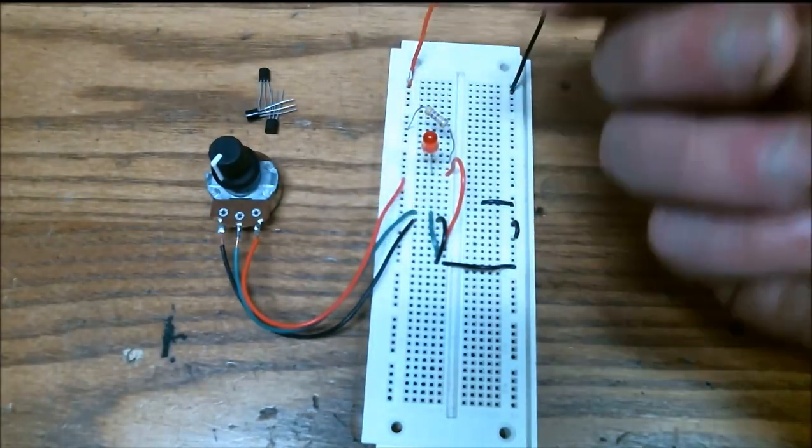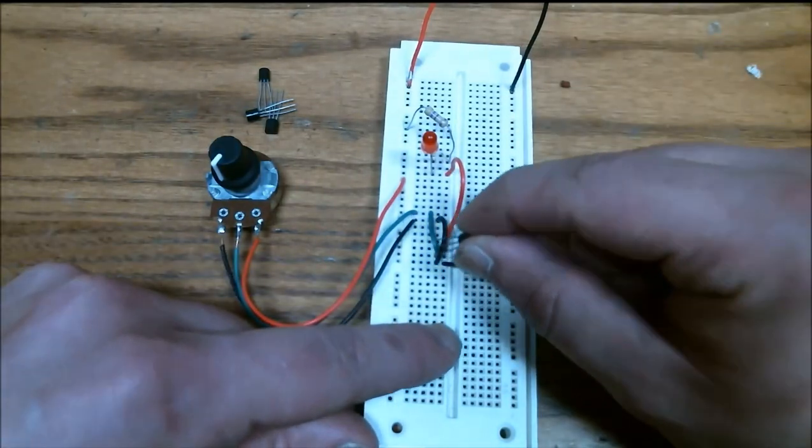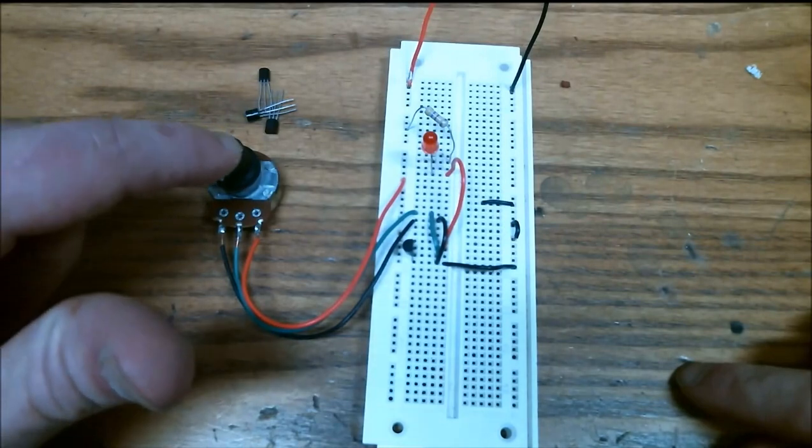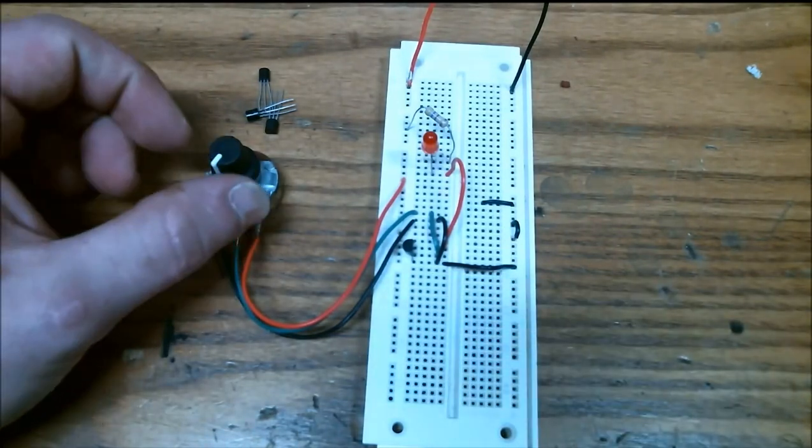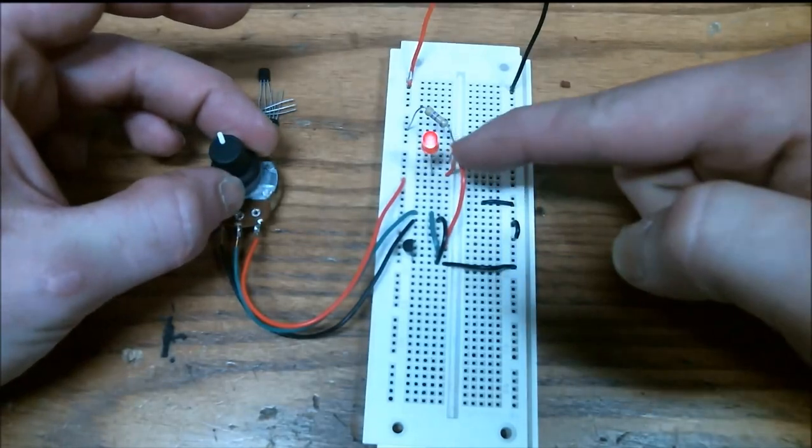So here's a transistor. I'm not sure what type it is. And I'll put it into the circuit. And presently, the voltage at the base is zero volts. So the light didn't come on, so I'm going to turn it up, and the light did come on.